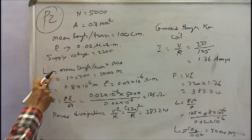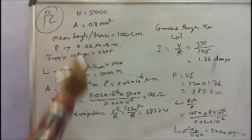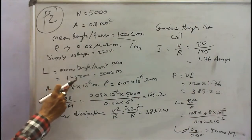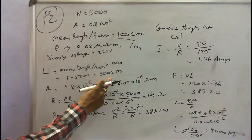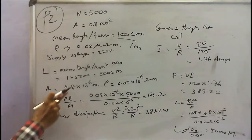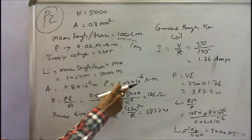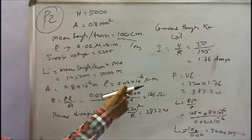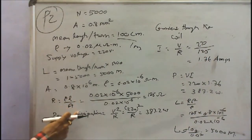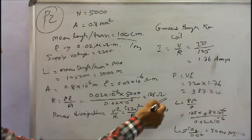The total length L is equal to mean length per turn multiplied by number of turns. Mean length per turn is 100 cm = 1 meter, so L = 1 × 5000 = 5000 meters. Cross-sectional area is 0.8 mm² = 0.8 × 10⁻⁶ m². Resistivity is 0.02 micro-ohm-meter. Converting all units and substituting into R = rho × L / A gives resistance = 125 ohms.